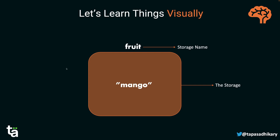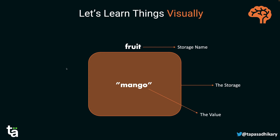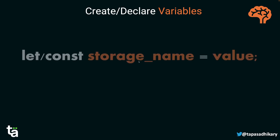Now let's look at how to create a variable in code. The syntax is: you use a keyword called `let` or `const`, then you give the storage name, then an assignment operator, and then the value you want to store in that storage.